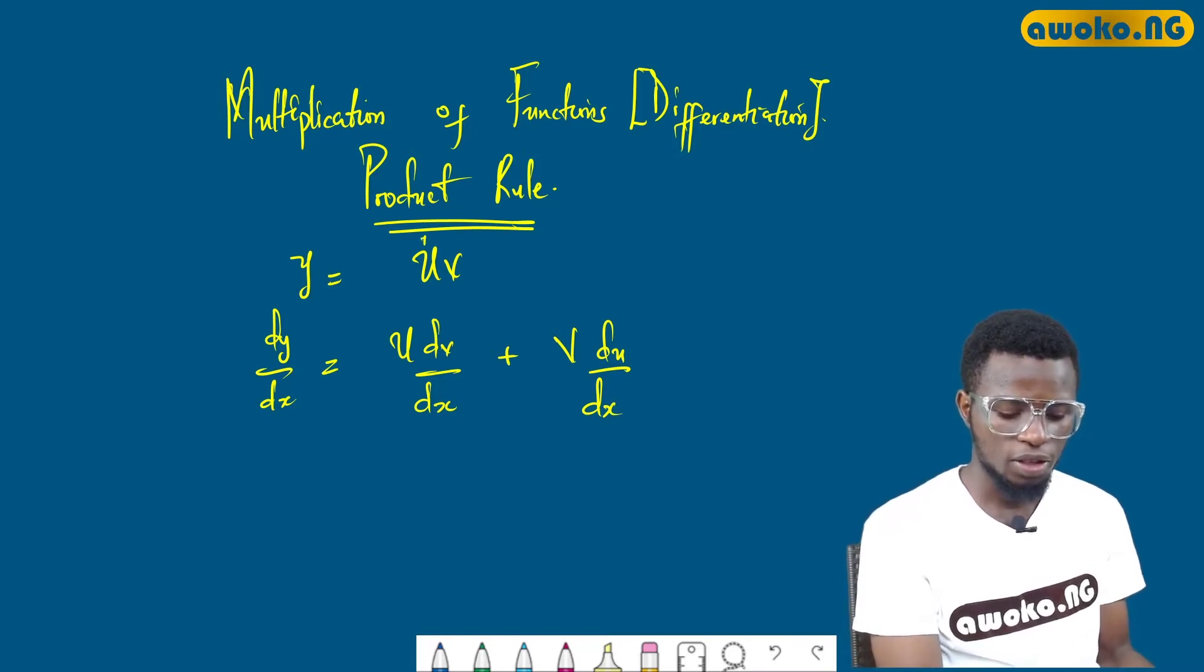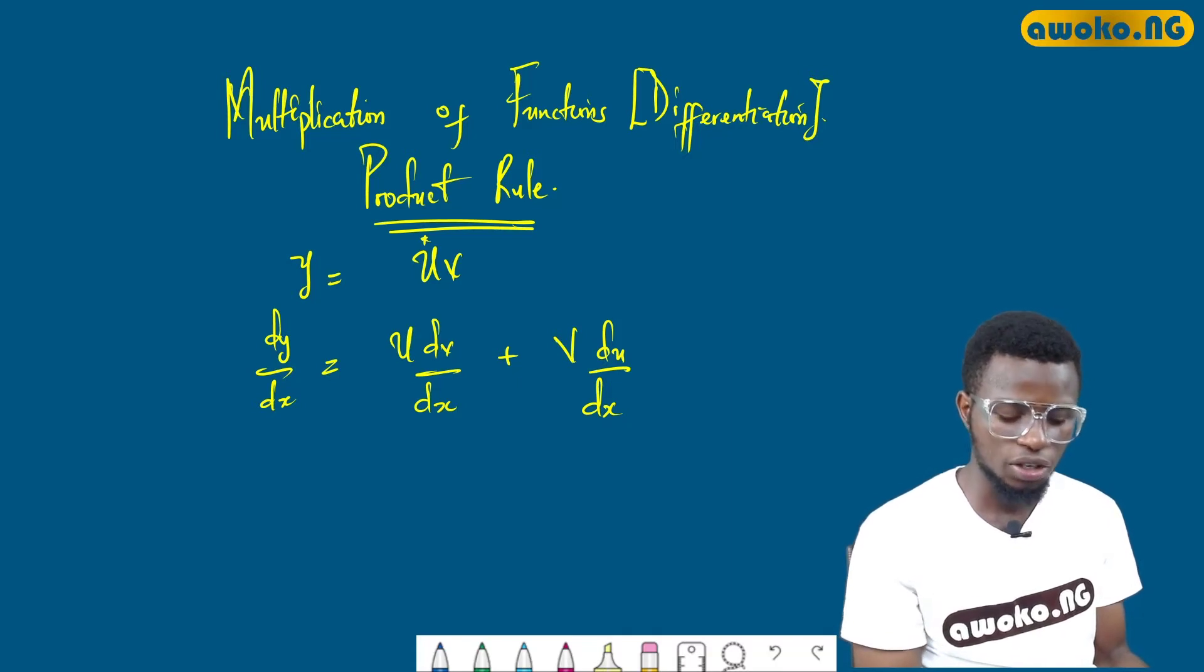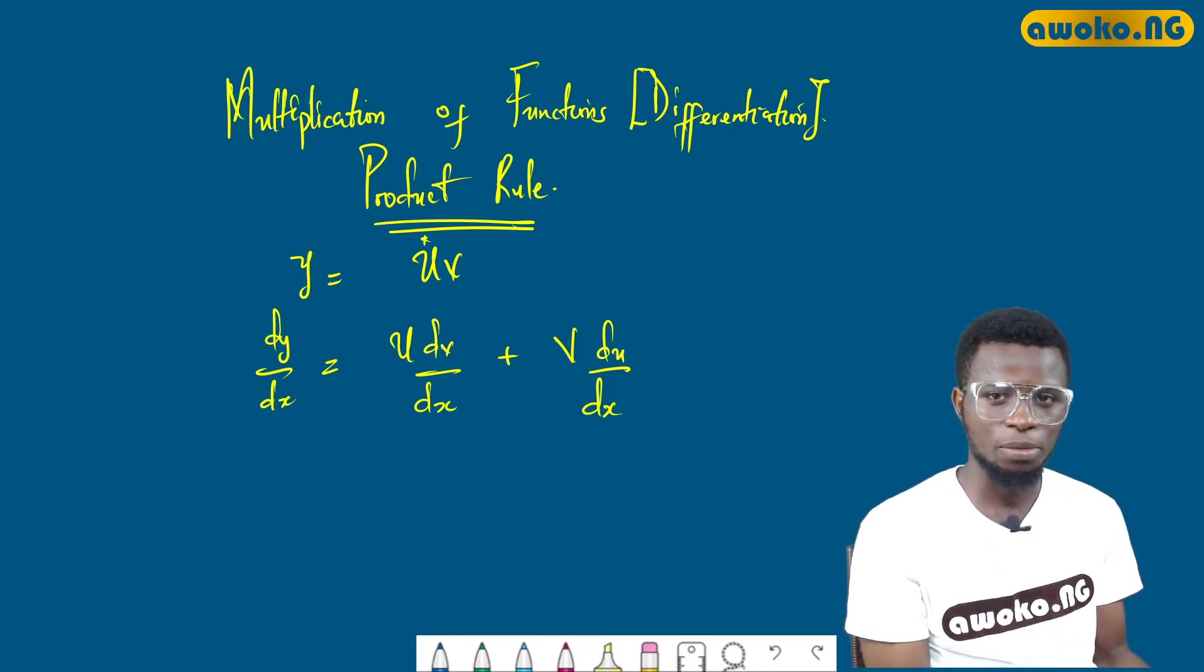That is, you pick the first term constant, make it constant, and differentiate the second term, plus keep the second term constant and differentiate the first term.